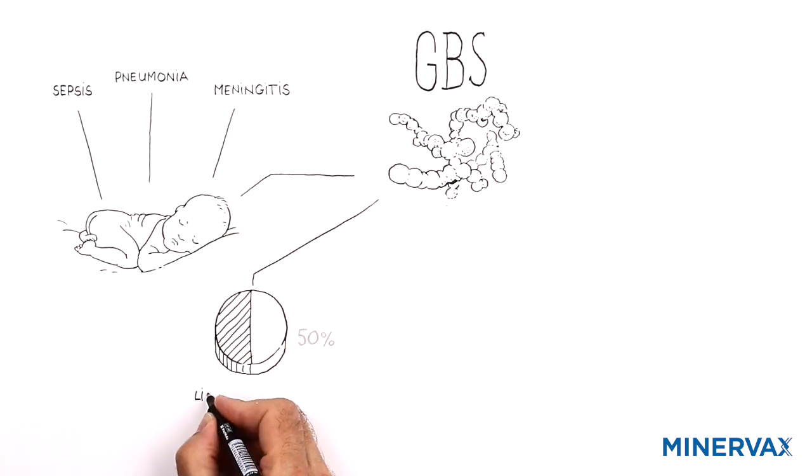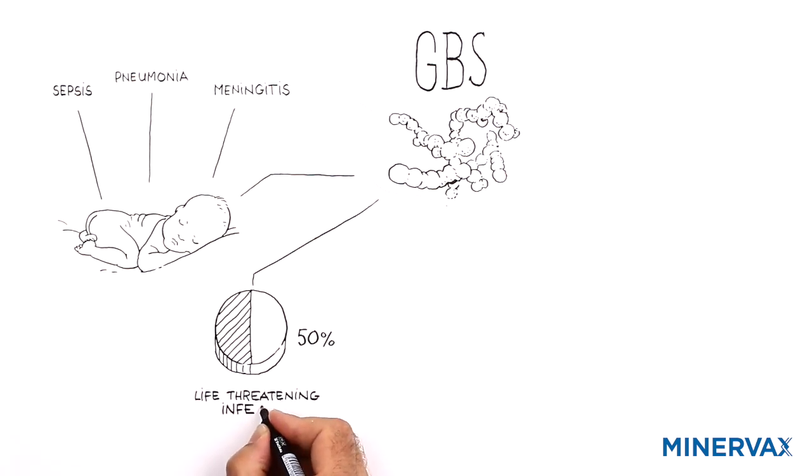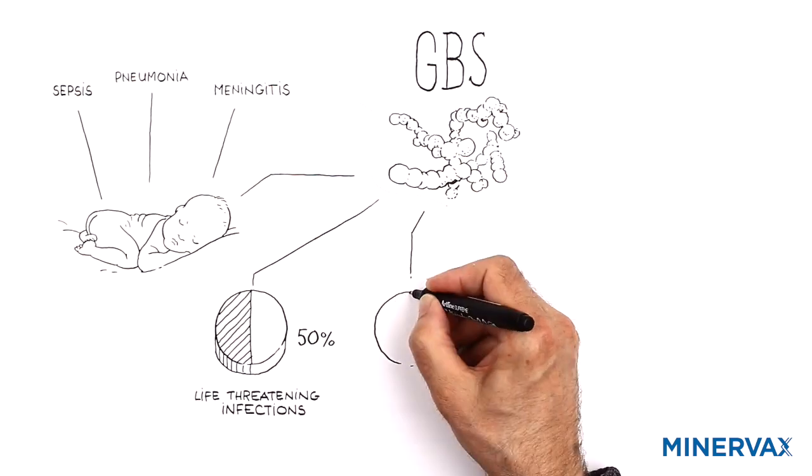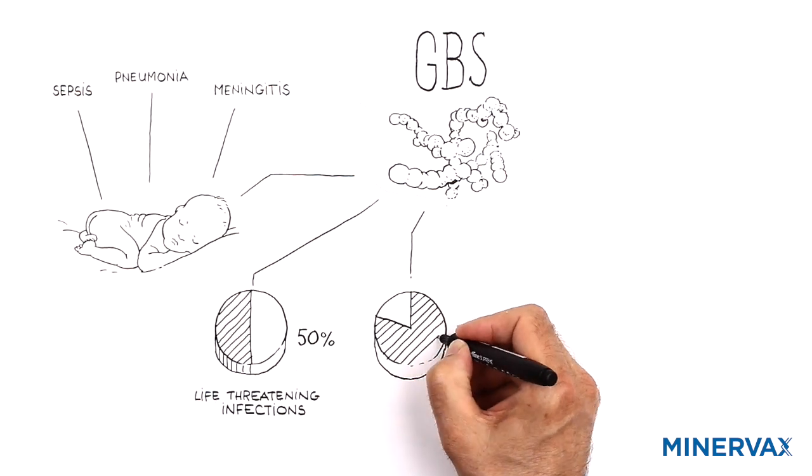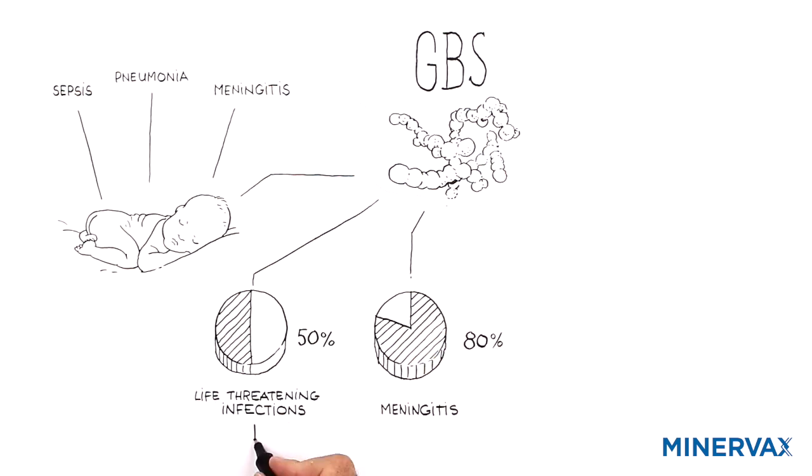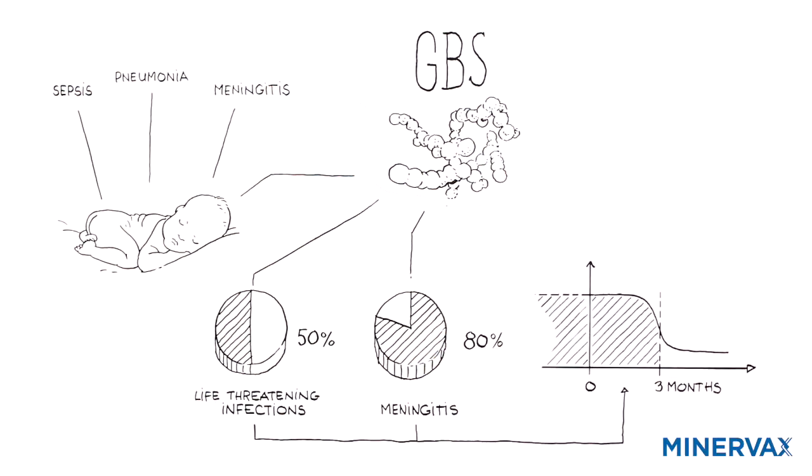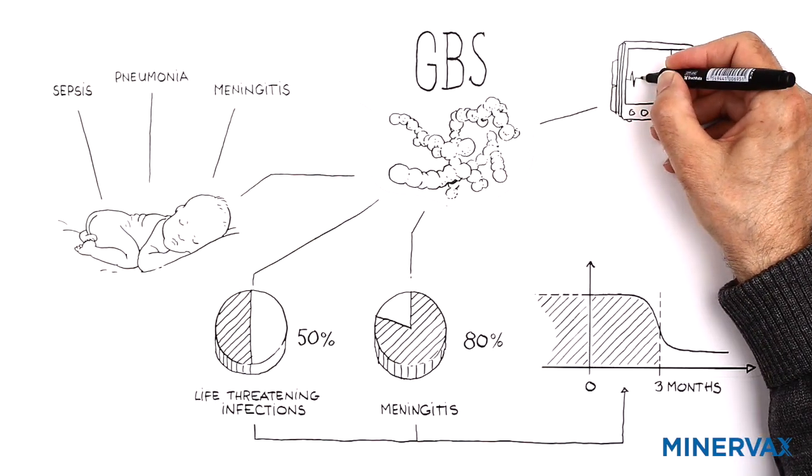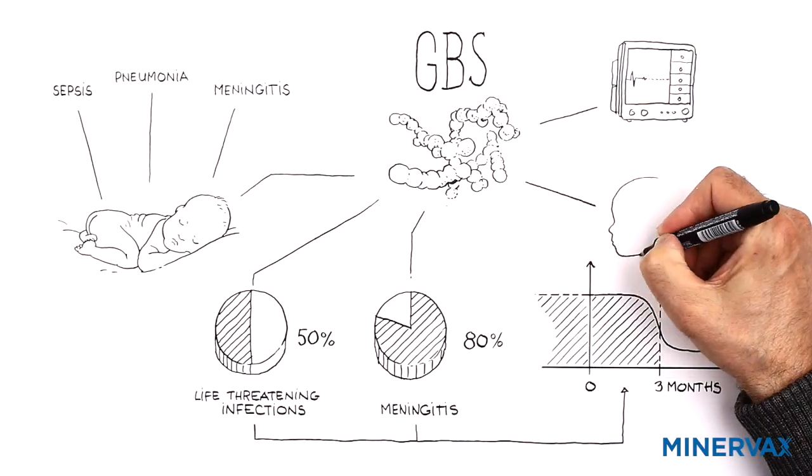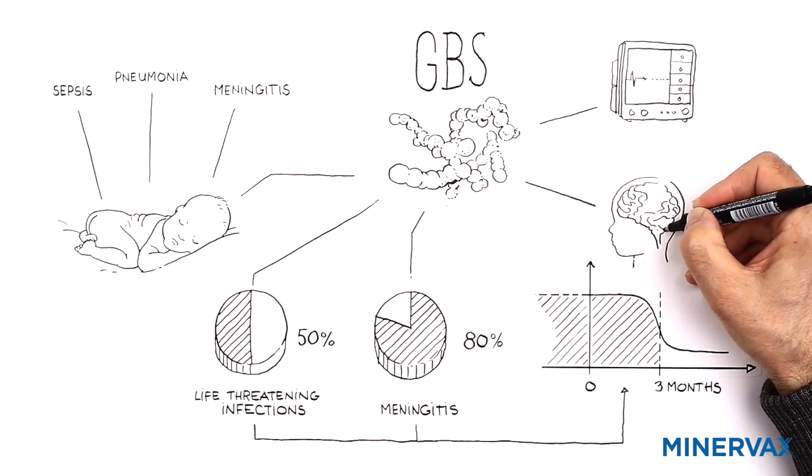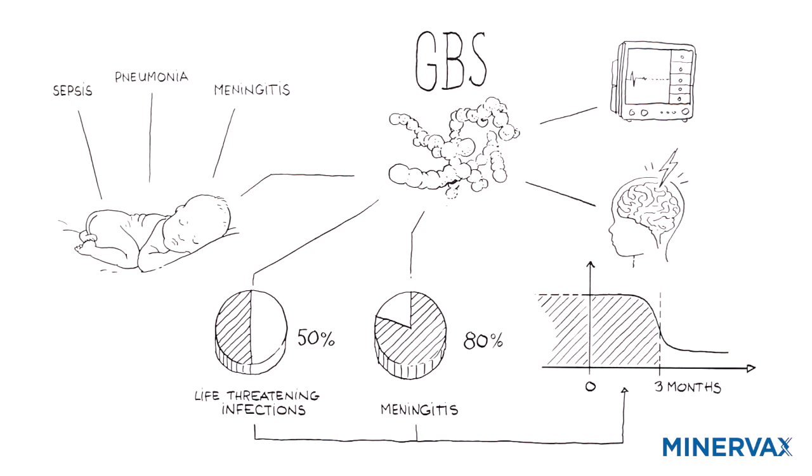GBS infections are responsible for approximately 50% of life-threatening infections and approximately 80% of meningitis cases in babies in the first three months of life. These infections may result in infant death, and meningitis and sepsis can cause lifelong neurological impairment of the child.